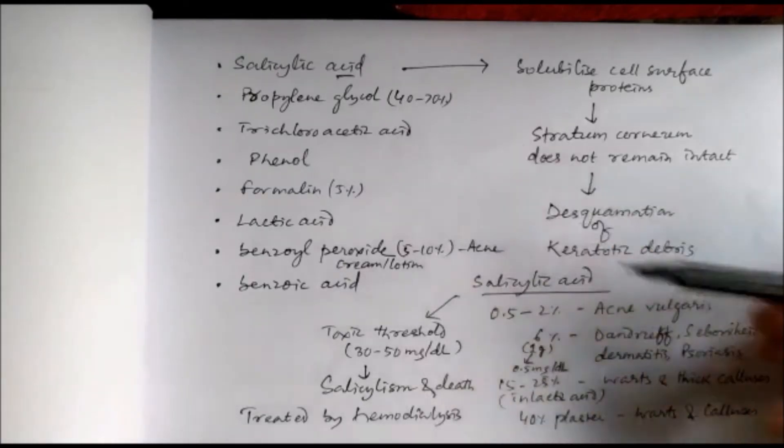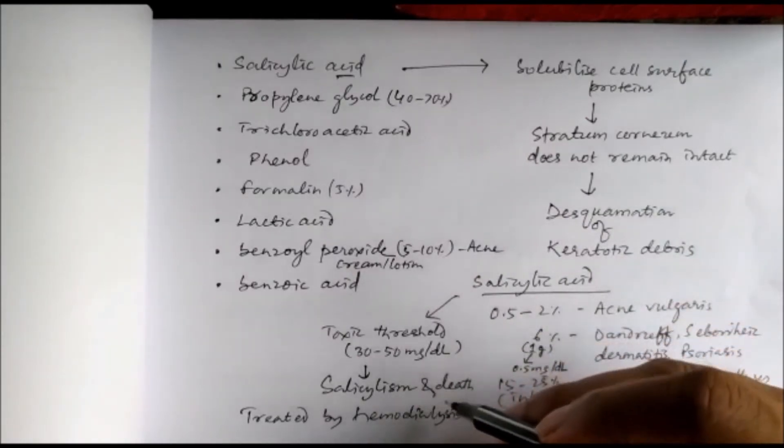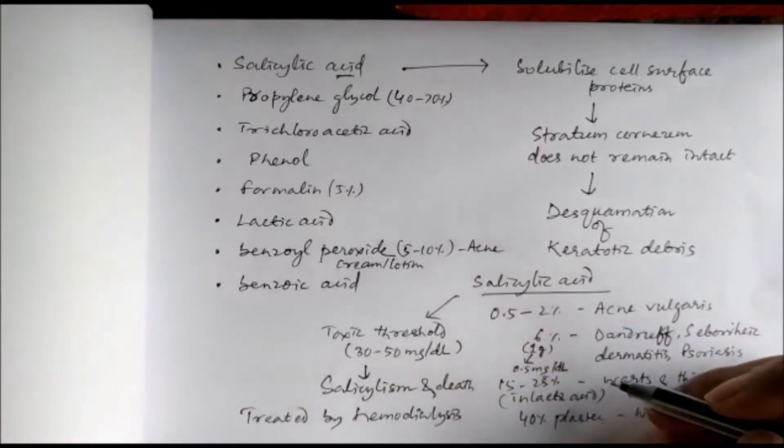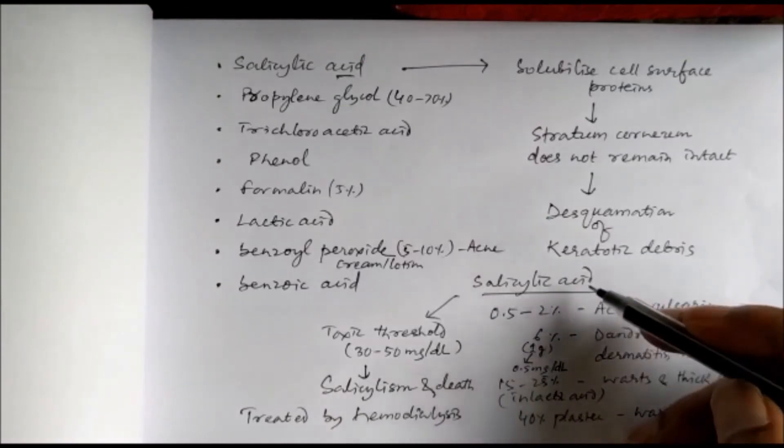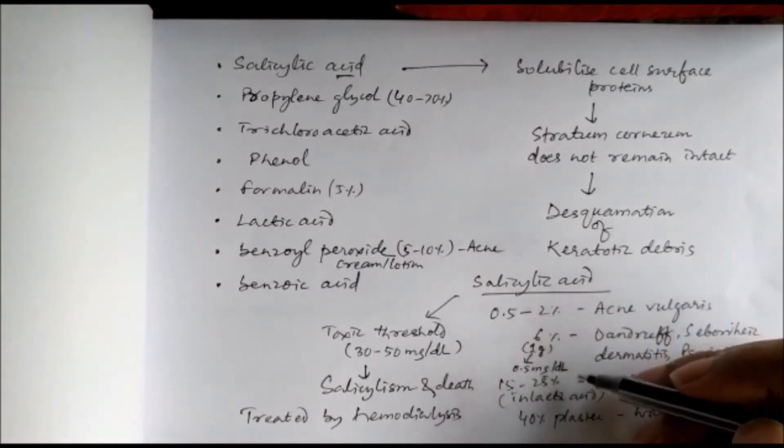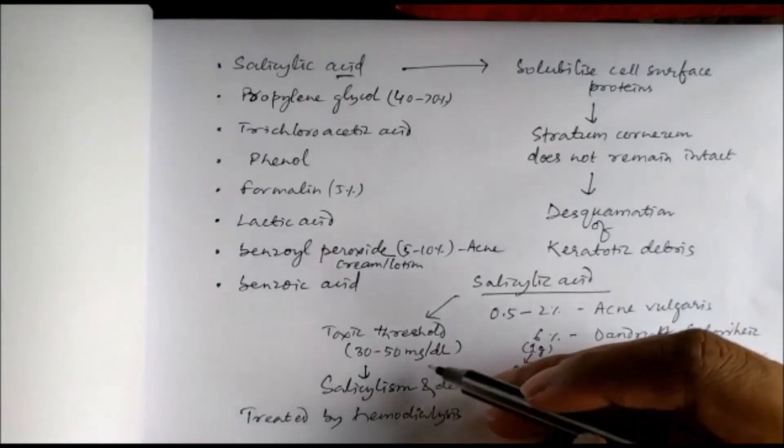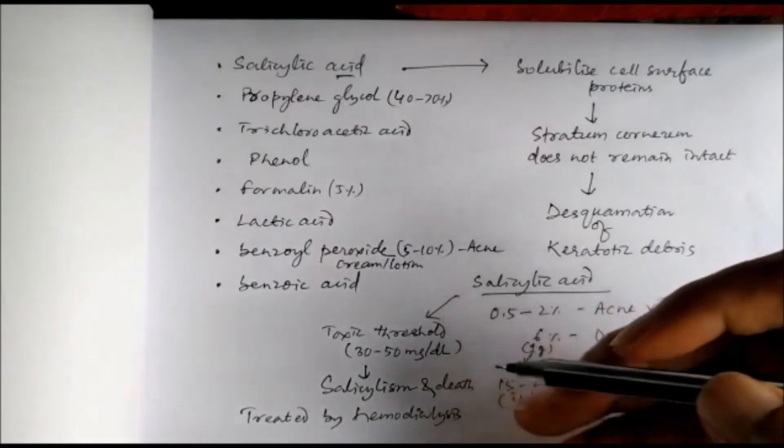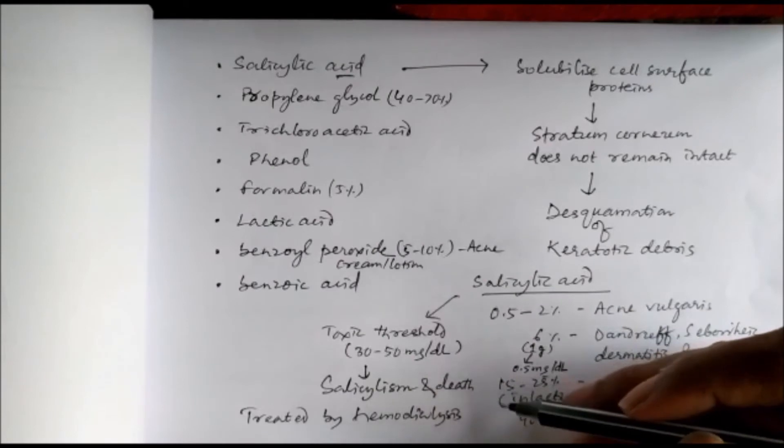Salicylic acid, though it is used topically, can also cause salicylism because even though used topically, 1 gram of 6% salicylic acid can raise the plasma concentration of salicylic acid up to 0.5 milligram per deciliter. The toxic threshold of salicylic acid in our plasma is 30 to 50 milligram per deciliter, so if that is reached, it will cause salicylism and we can treat it by hemodialysis.